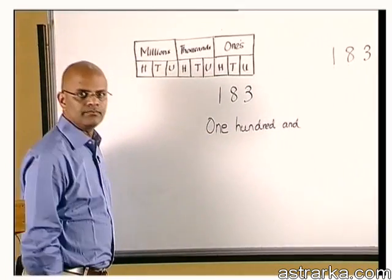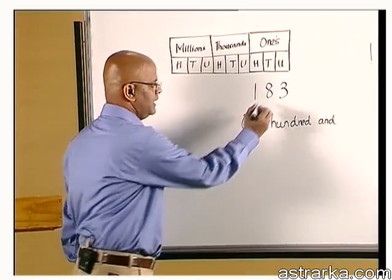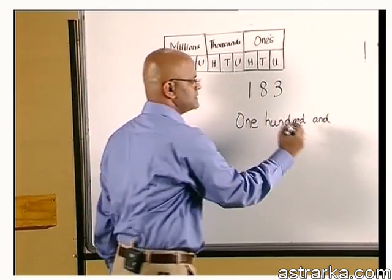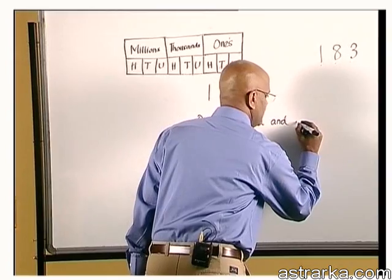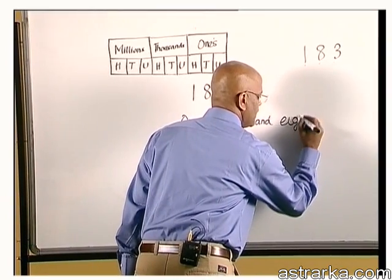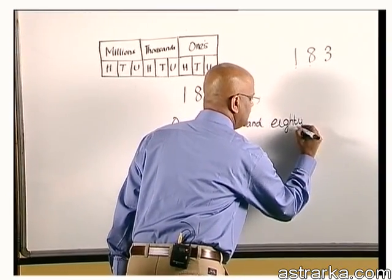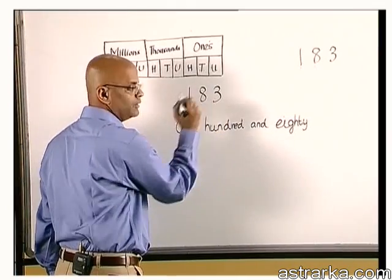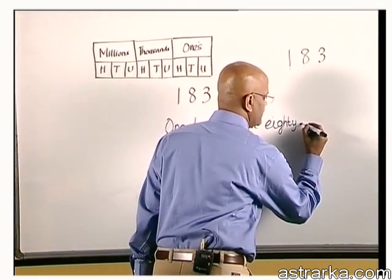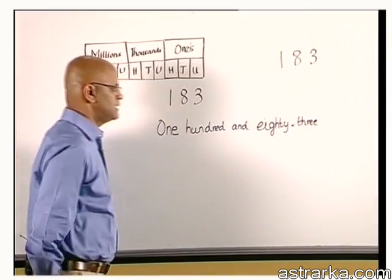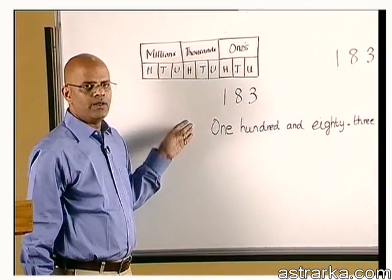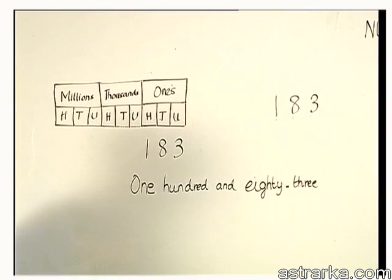Eight is in tens place. When eight is in tens place, the number is 80, correct? And 80, the units place is 3, therefore it is 3. Therefore, this number is one hundred and 83.